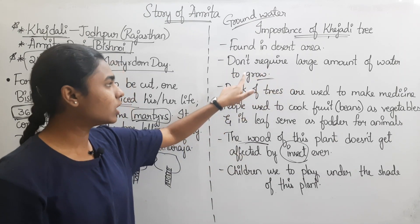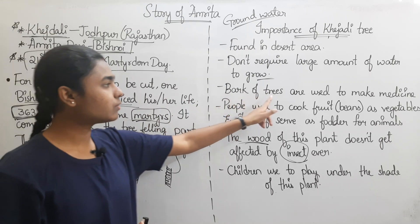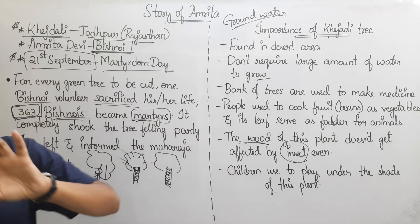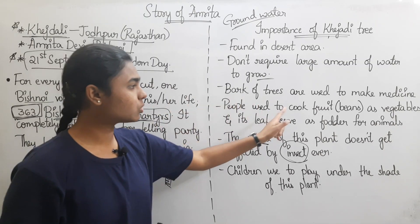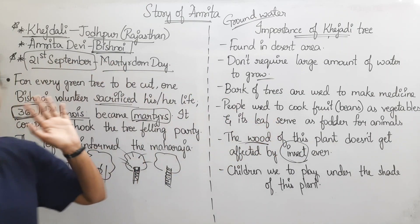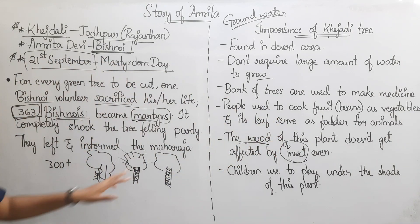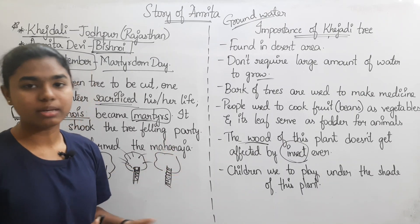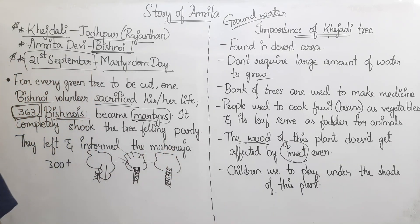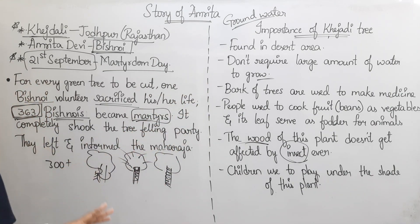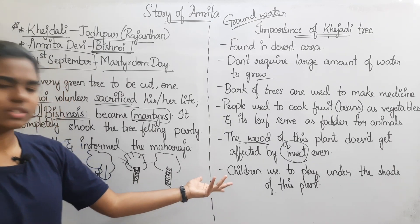To summarize the properties of Khejri trees: 1. They do not require a large amount of water to grow. 2. The bark of the trees is used to make medicines. 3. People cook the fruit — beans — as vegetables, and the leaves serve as fodder for animals. 4. Beans are used as vegetables.